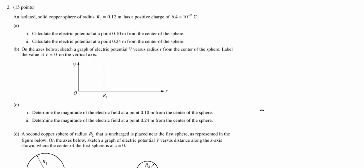This is number 2 from the 2011 AP exam, an electrostatics problem. We have a solid copper sphere with a 0.12 meter radius and an overall charge of 6.4 times 10 to the negative 9 coulombs. We want to determine the electric potential at certain distances from the center of the sphere.